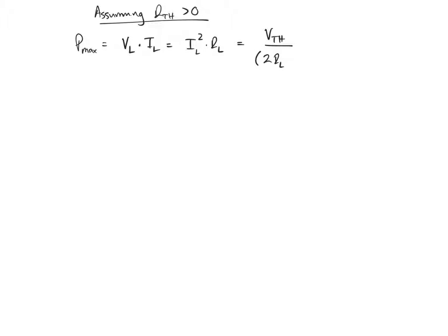Given that RL equals RTH, this simplifies to VTH squared over 4RL, or 4RTH. It's the same thing. So the maximum power delivered to the load is when RL equals RTH, and that would equal the square of the Thevenin voltage over 4 times the Thevenin resistance.